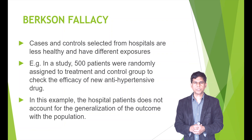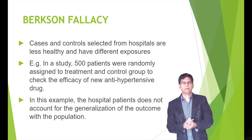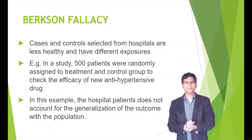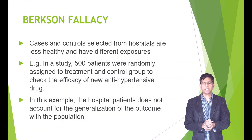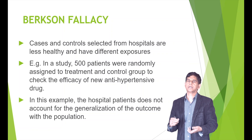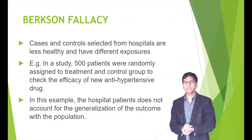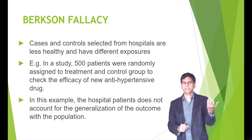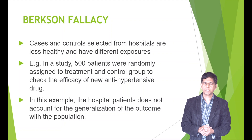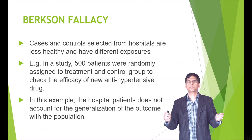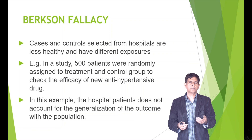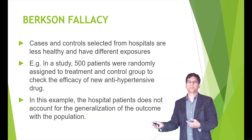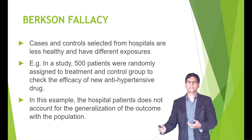The next one is the Berkson fallacy. This occurs when cases and controls are selected from a hospital where patients are less healthy and have different exposures. For example, 500 patients randomly assigned to a treatment and control group to check the efficacy of a new antihypertensive medicine — in this case, hospital patients may not represent the general population. One hospital may have a very healthy patient population while another has less healthy patients, which can affect the study results.